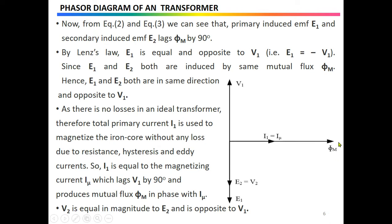By Lenz's law, E1 is equal and opposite to V1, so the direction of V1 is opposite to E1 in the phasor diagram. According to Lenz's law, the direction of the induced EMF always opposes the cause. Since E1 and E2 are both induced by the same mutual flux Φm, both E1 and E2 are in the same direction in the phasor diagram.